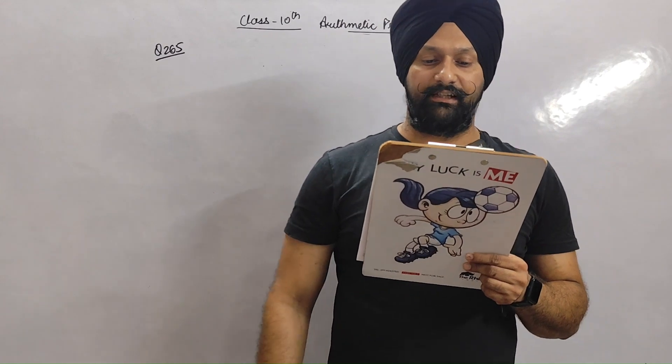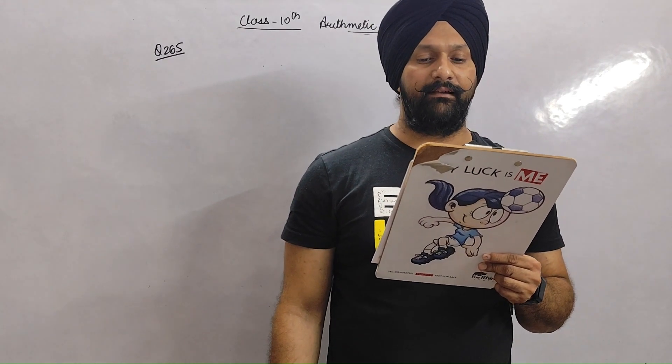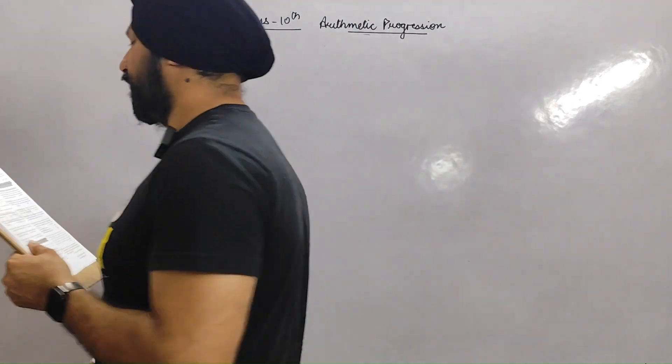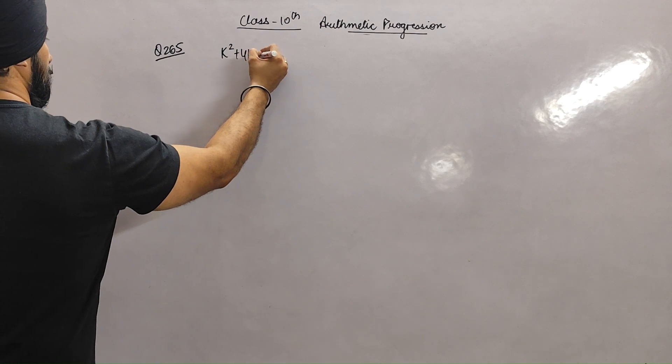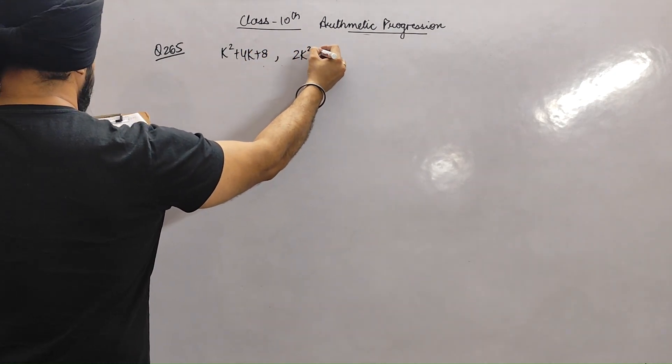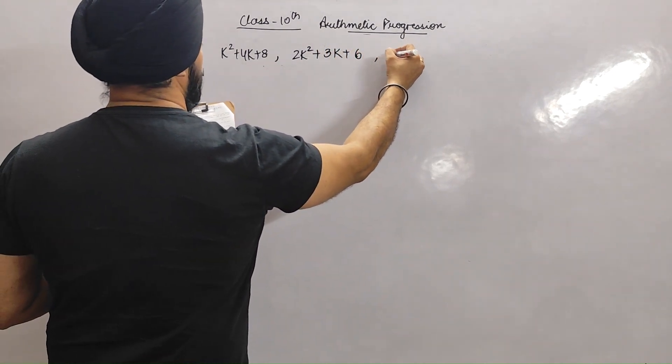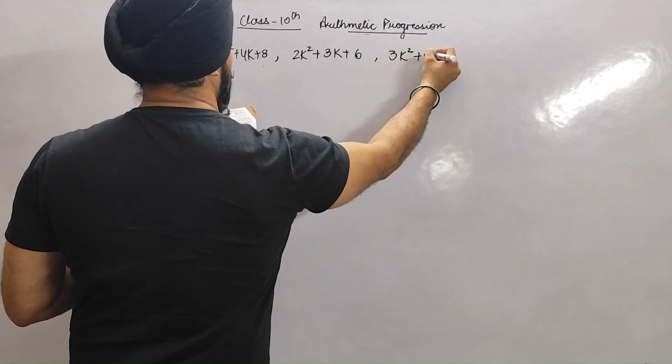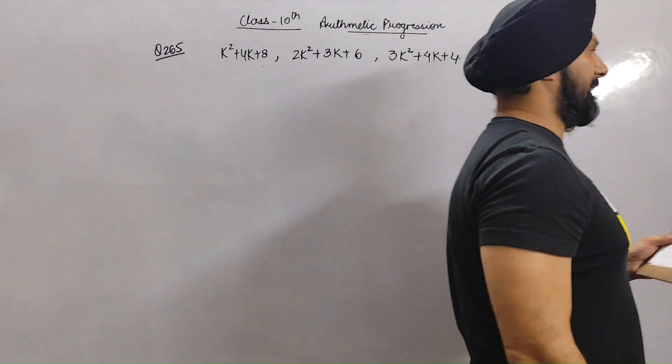Question number 265, again of the similar category. Determine K so that K square plus 4K plus 8, 2K square plus 3K plus 6, and 3K square plus 4K plus 4 are three consecutive terms of an AP.